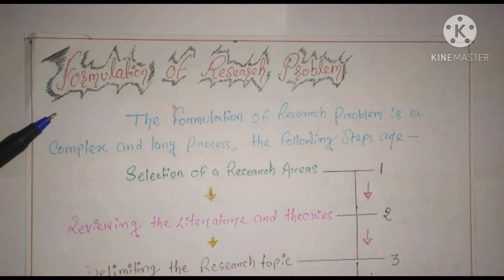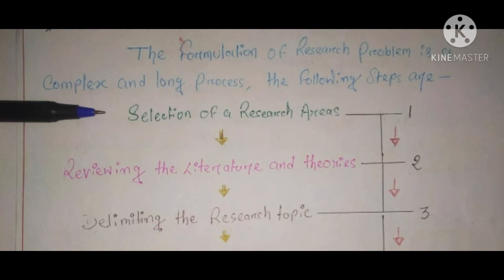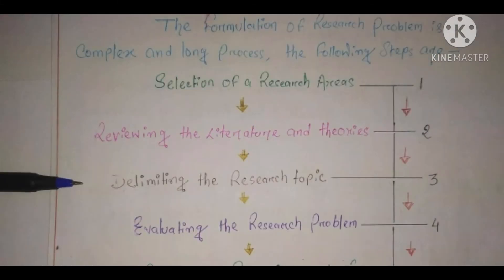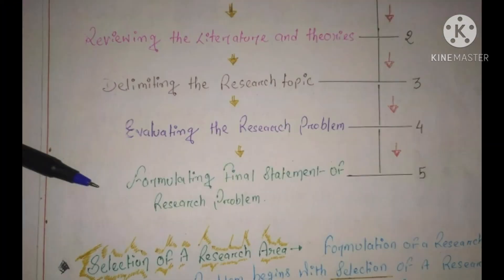The following steps are involved — there are five steps in total. The first one is selection of research area. The second is reviewing the literature and theories. The third is delimiting the research topic. The fourth is evaluating the research problem. And the fifth one is formulating the final statement of research problem. Now let's understand these one by one.